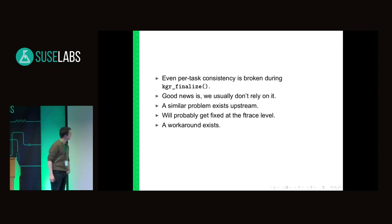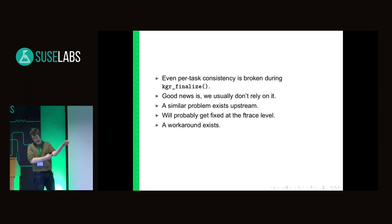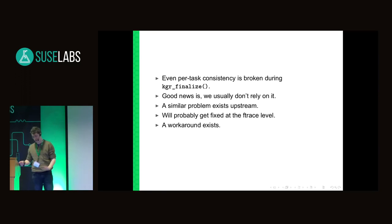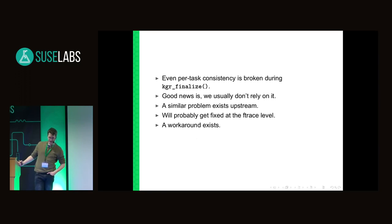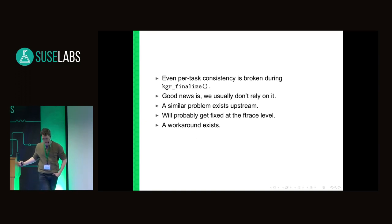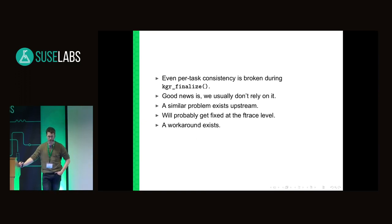In conclusion, per-task consistency is broken during kgr_finalize. Fortunately, we haven't used it ever, so all released live-patches are fine. With upstream kernel live-patching there's a similar problem, and the F-trace maintainer Steven Rostedt has promised to look into it, hopefully getting it fixed at the F-trace level.